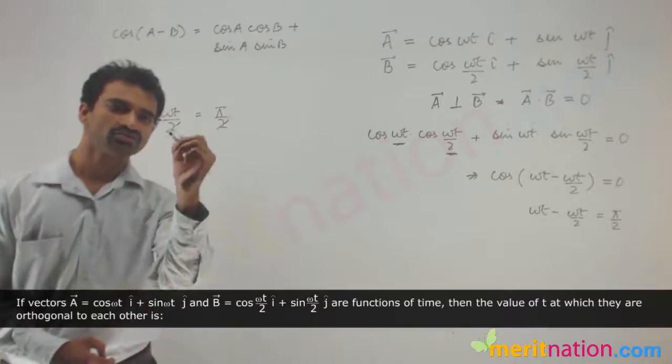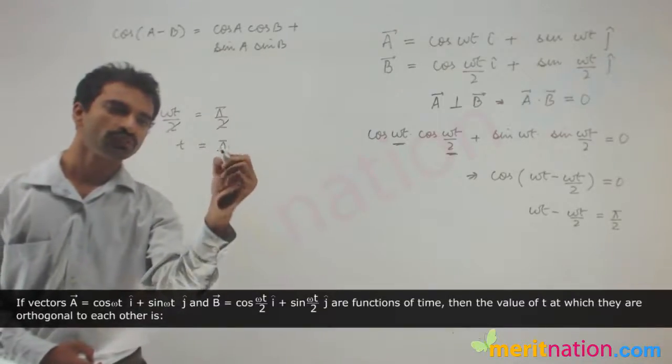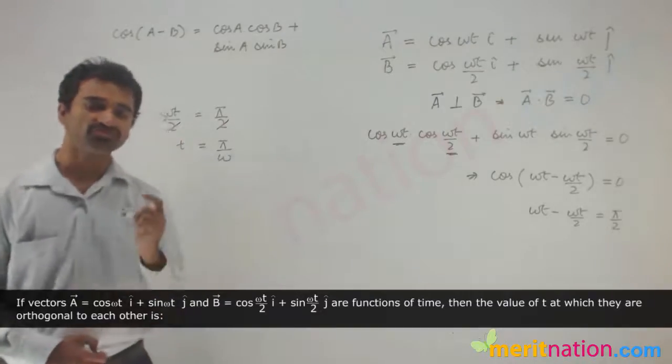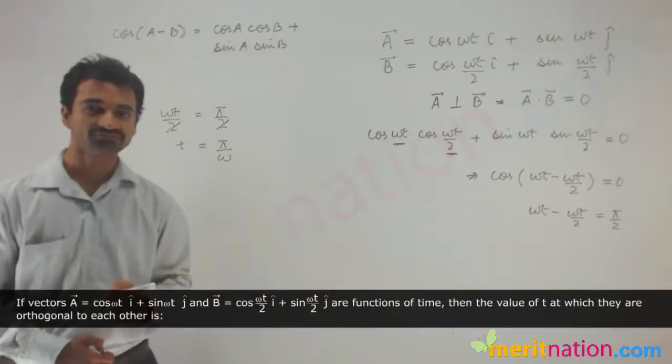I can cancel out the 2 over here and I will get t is equal to π by ω, and from the given options we can see that option 4 is the correct answer. Thank you.